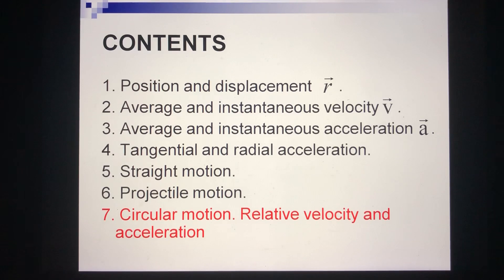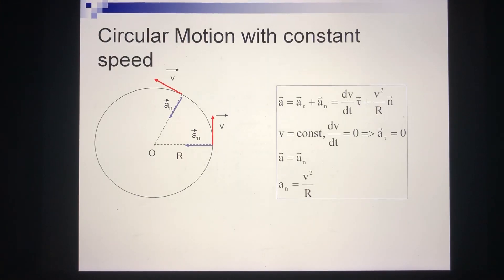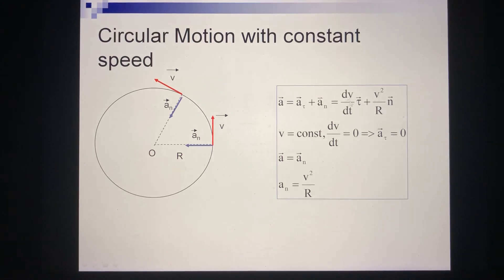In this video I will talk about circular motion and relative motion. Firstly, I would like to remind a bit about acceleration. Acceleration is a combination of tangential acceleration and normal acceleration, where tangential acceleration describes the change in magnitude of velocity, and normal acceleration describes the change in direction of velocity.